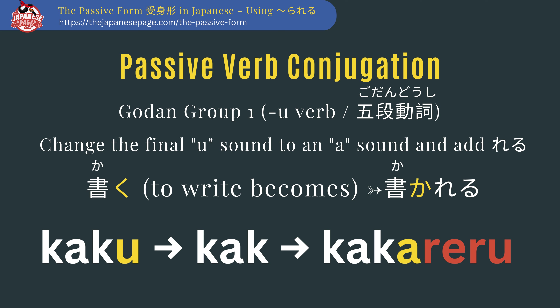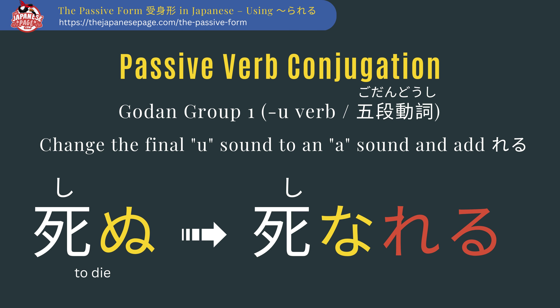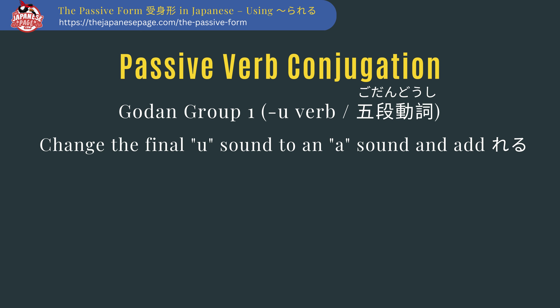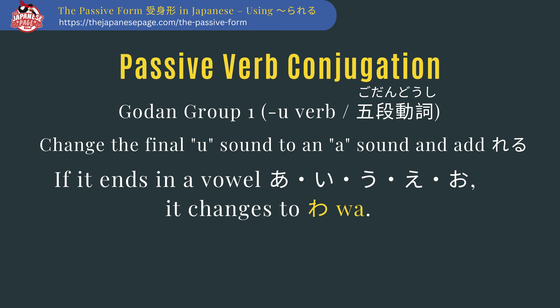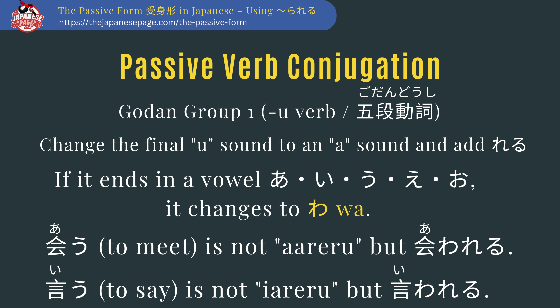Let's spend a moment with the godan group 1 verbs, since these are the most challenging. Remember, you have to change the final u-sound to an a-sound. In the case of kaku (to write), the final ku-sound becomes ka, giving kakareru. How about shinu (to die)? The final nu-sound becomes na, giving shinareru. There is one tricky part: if the verb ends in a vowel (a-i-u-e-o), it changes to wa. So au (to meet) is not arereru but awareru, and yuu (to say) is not iarereru but yuwareru. Other than that, just remember to change the final vowel sound to an a and you're all set.